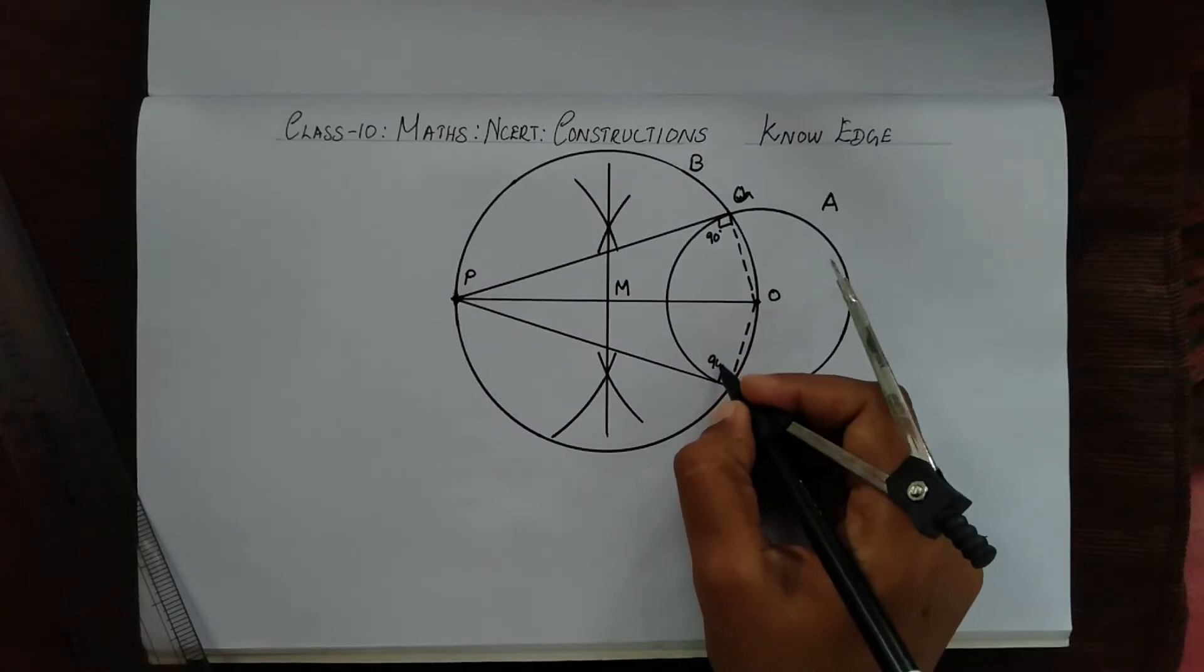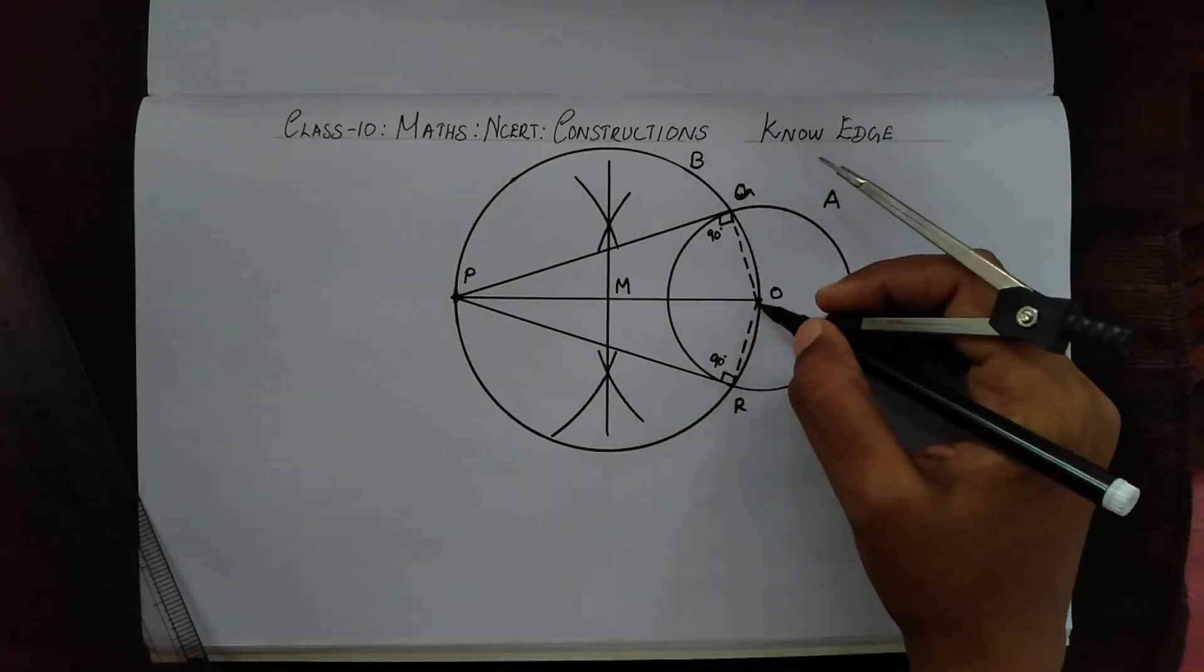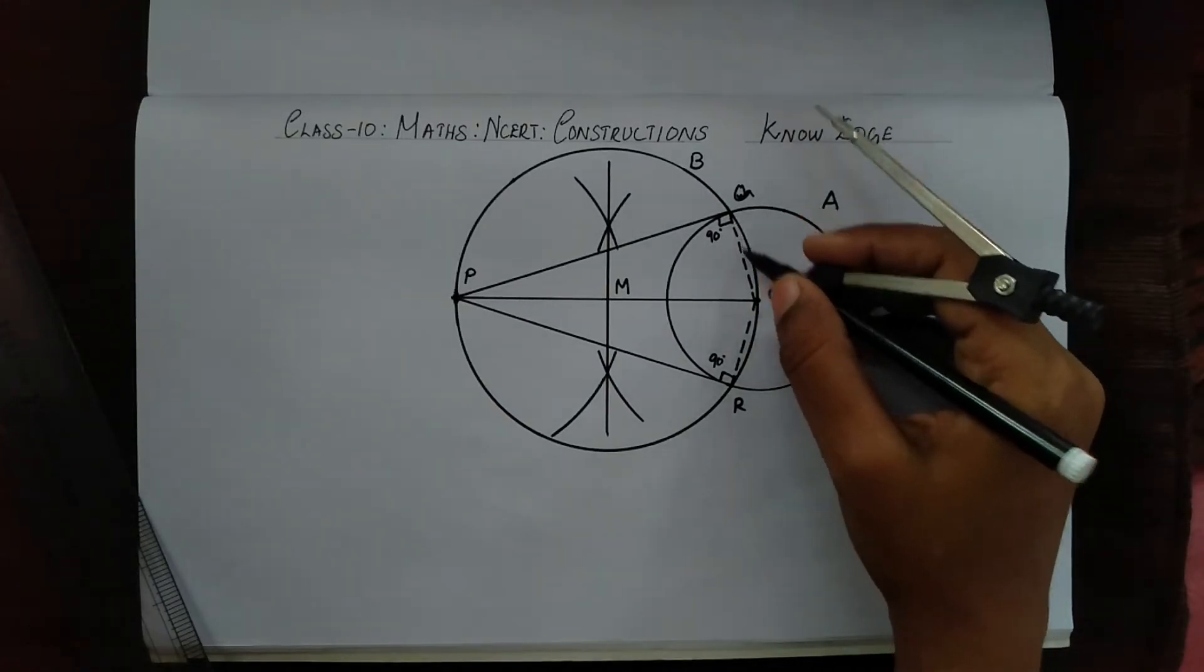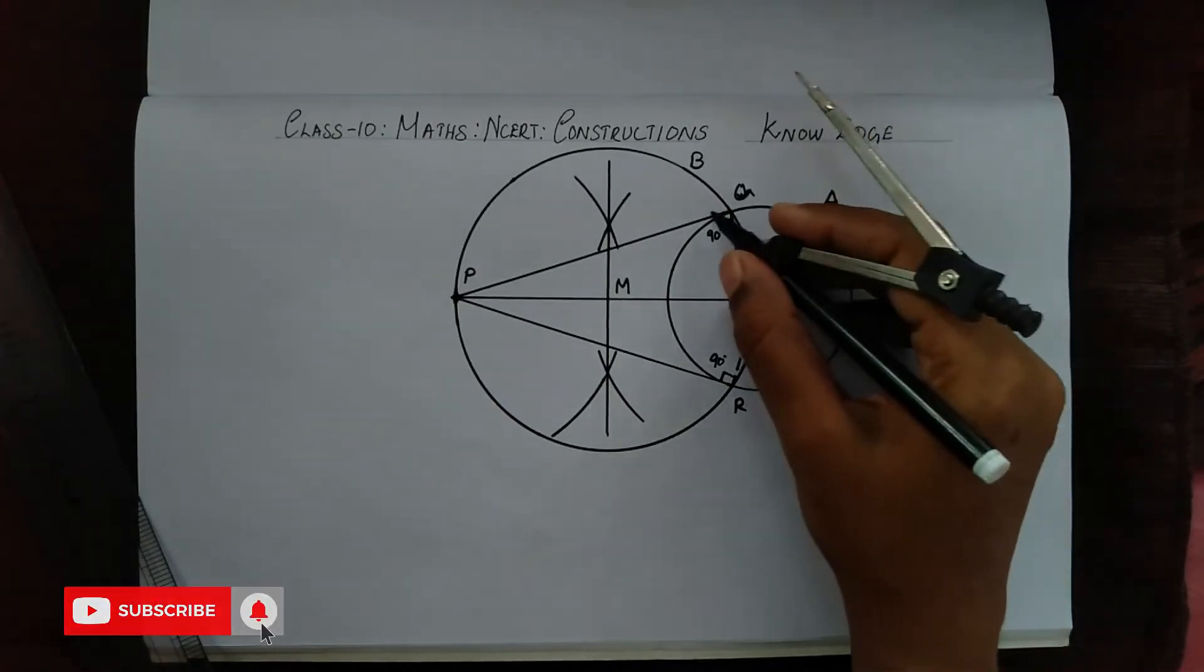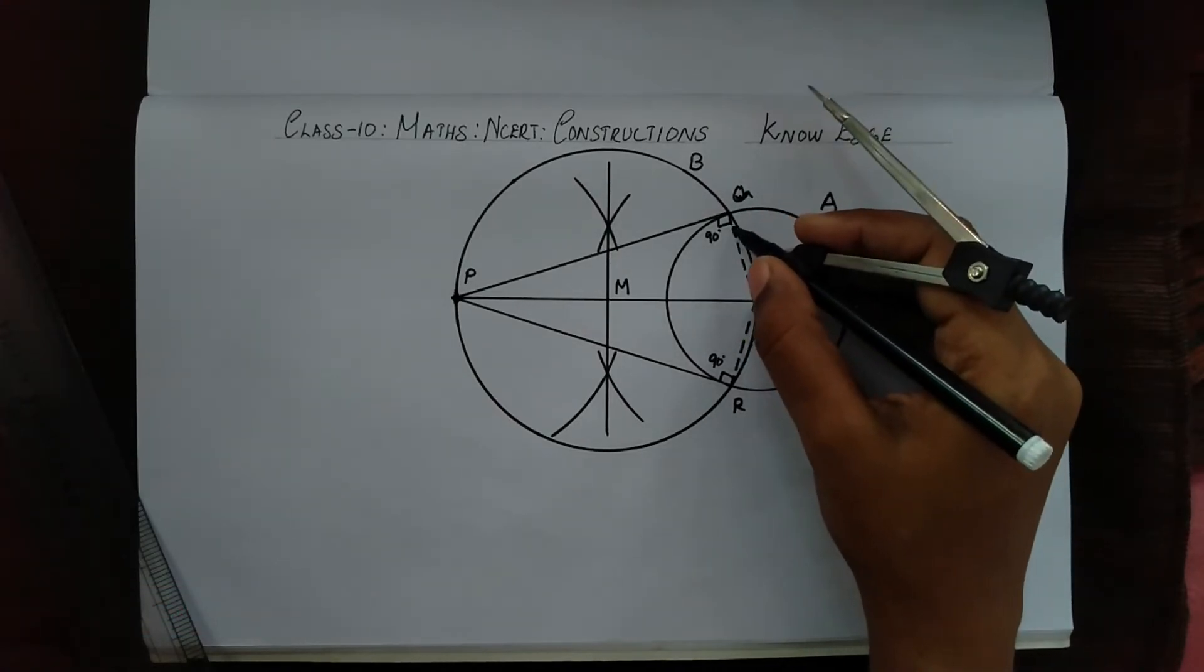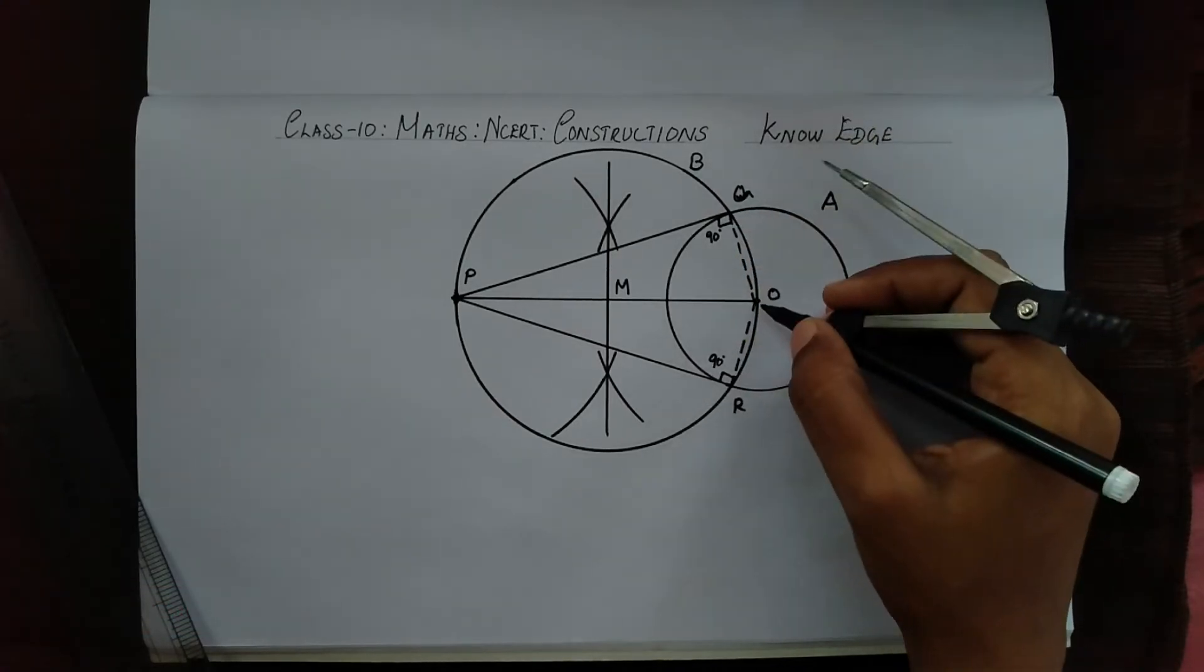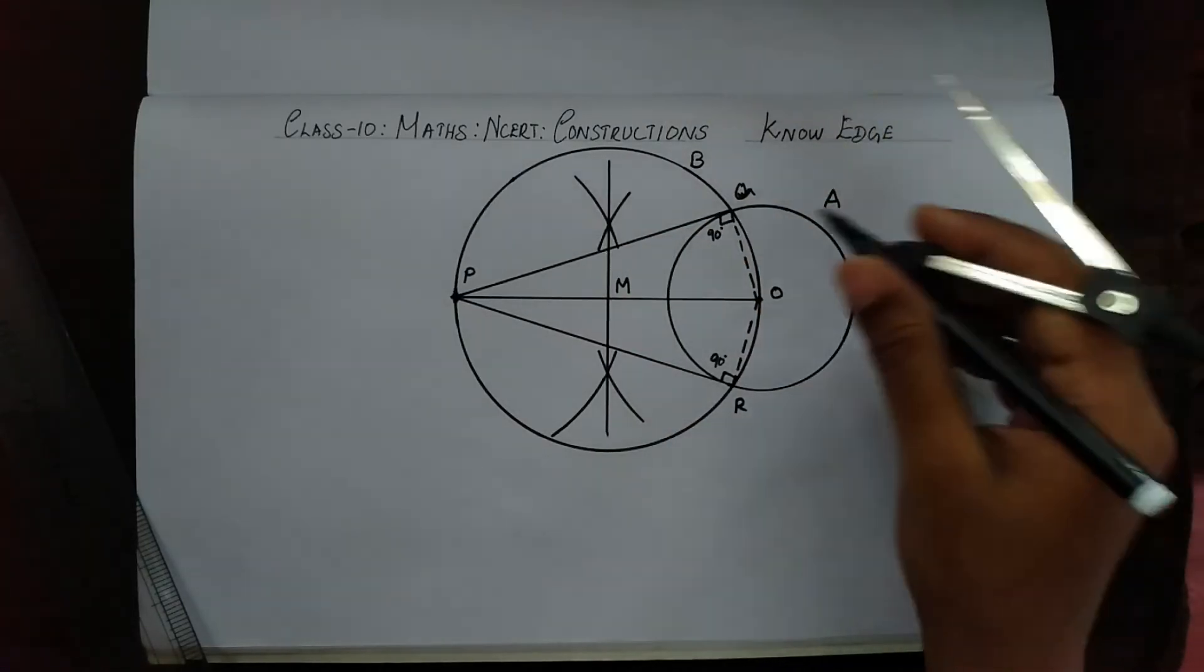We also know that a tangent is a line which is perpendicular to the radius of the circle. This happens to be the radius of circle A and this is the tangent, so this is perpendicular. Because this angle is 90 degrees, this is a perpendicular line, so this is the tangent which touches the circle at one point.